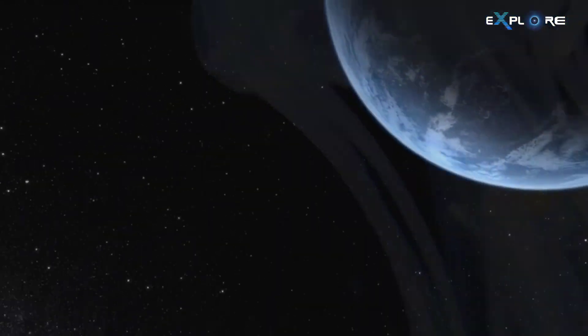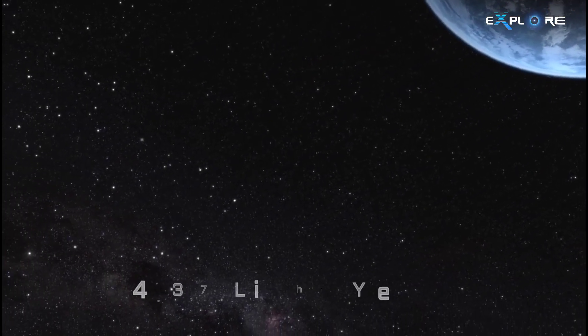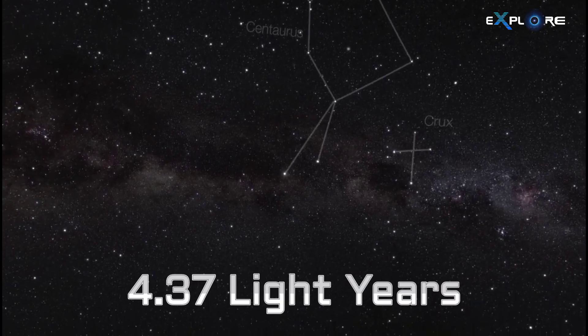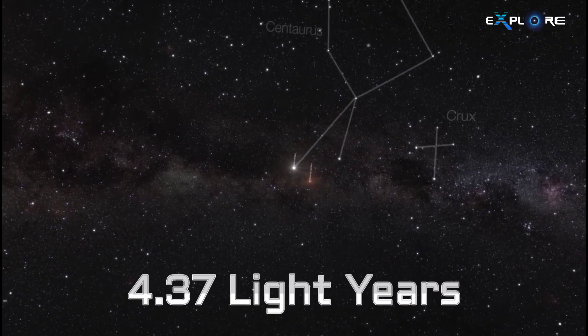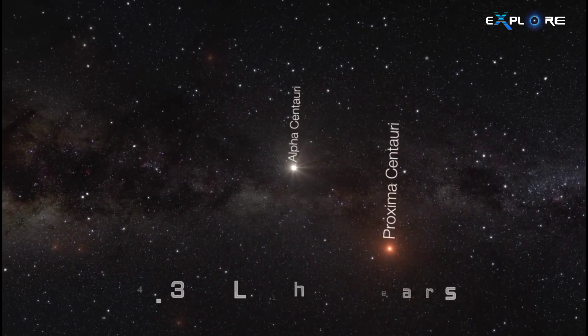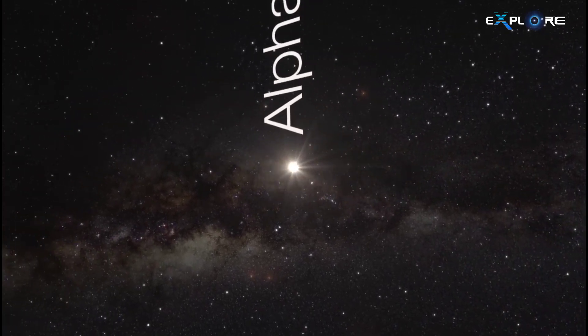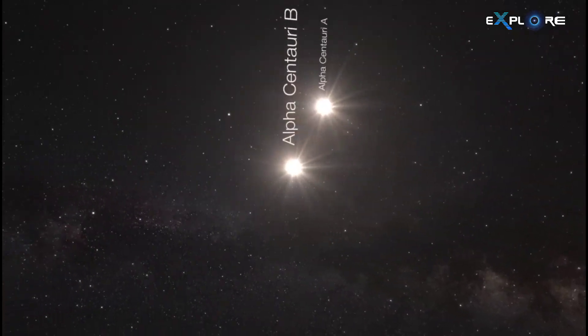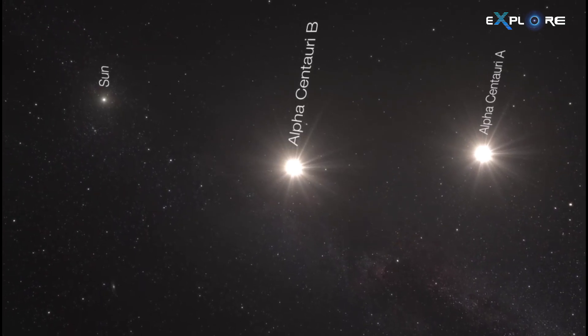Alpha Centauri, at a distance of 4.37 light-years away, stands as our closest neighboring star system. This proximity, though still seemingly distant in the vastness of space, positions it as a prominent target for exploration.